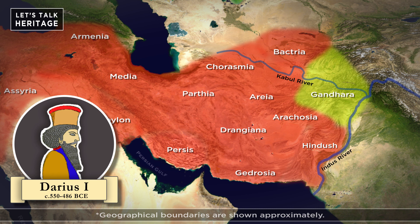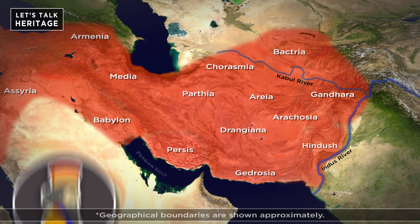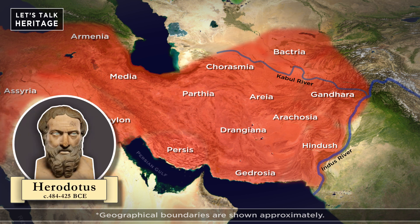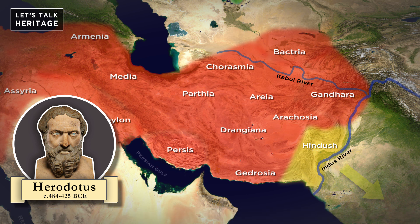The Gandharans belonged to the poorest Satrapy, or tax district, of the Achaemenid Empire. The Greek historian Herodotus mentions that Hindush, or Indian land, was the most prosperous region of the Persian Empire. He also notes that there were Indians who lived far away from the Persians southwards and were not subjects of King Darius.